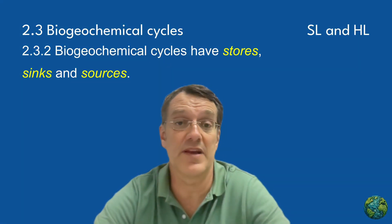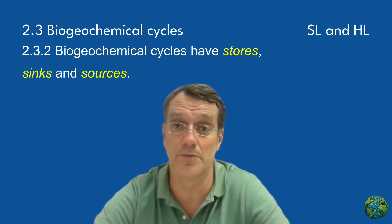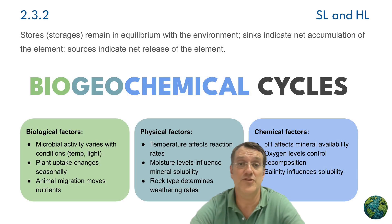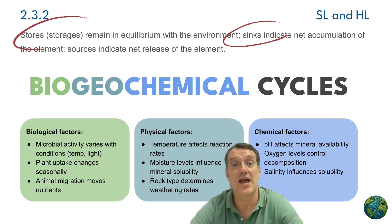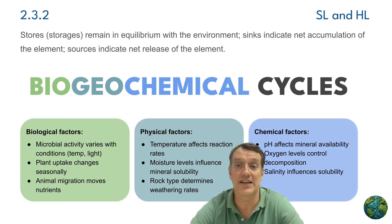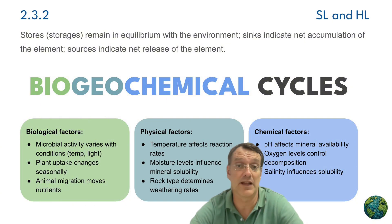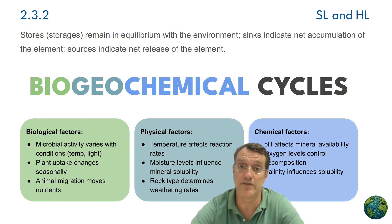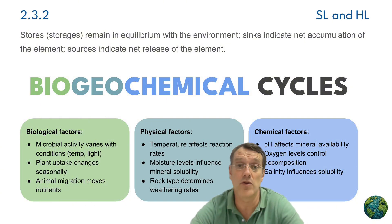Now let's examine how these cycles function as systems. Biogeochemical cycles have three key components: stores, sinks, and sources. Physical factors like temperature and moisture, biological factors like microbial activity, and chemical factors like pH all influence how these biogeochemical systems operate.